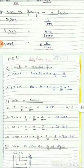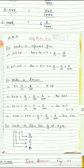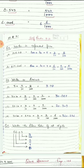Expanded form: suppose you have the number 145.38. How can we expand it? 145 is 100 + 40 + 5 — this is the whole part. Now for the decimal part: 3 upon 10 and 8 upon 100. Another example: 817.605 expands to 800 + 10 + 7 + 6 upon 10 + 0 upon 100 + 5 upon 1000.